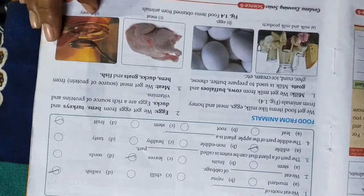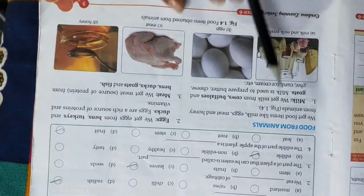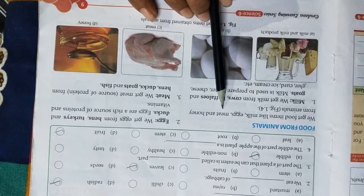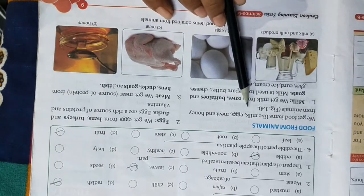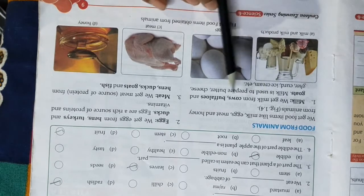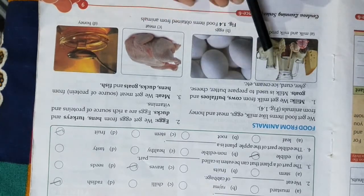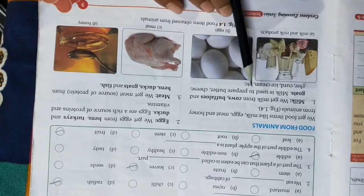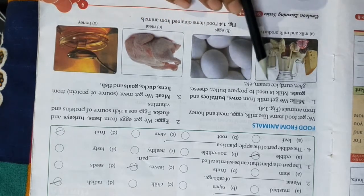Now, food from animals. We get food items like milk, eggs, meat, and honey from animals. We get milk from cow and buffalo. Milk is used to prepare butter, cheese, ghee, curd, and ice cream.